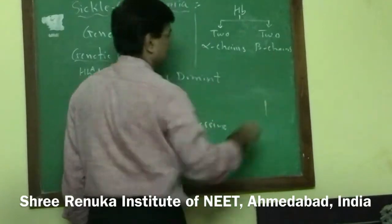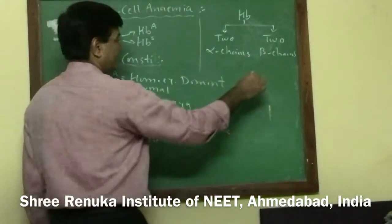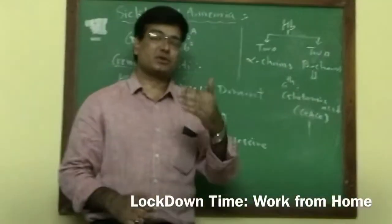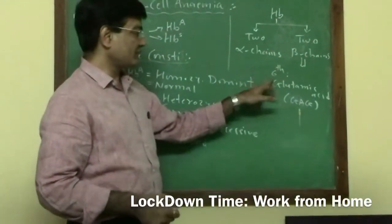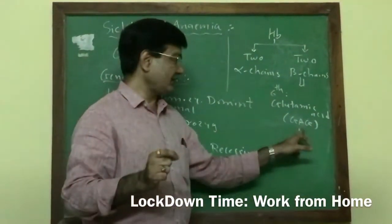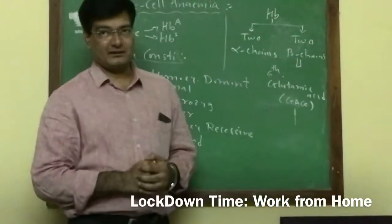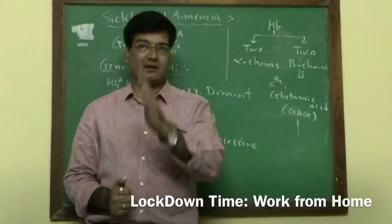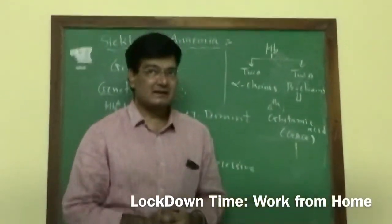In the beta chain, at the sixth position, glutamic acid is present. Its genetic code is GAG on the mRNA. If a genetic abnormality occurs at the time of DNA synthesis during DNA replication, the adenine kind of nitrogen base is replaced by uracil.